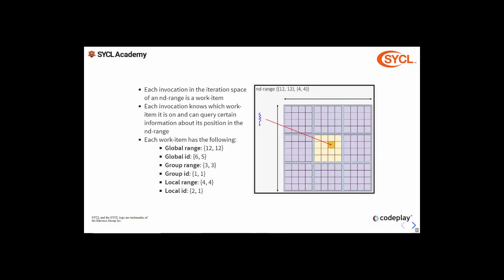One thing to note here is that different levels of this information will be provided to the kernel function depending on which API you use to invoke your ND range, but we'll be covering these different APIs later on in this lecture.